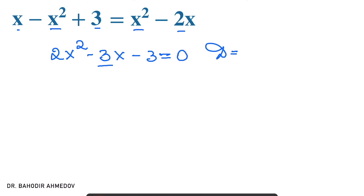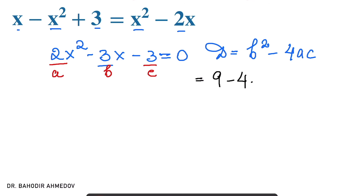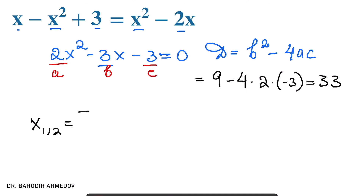The discriminant formula is b squared minus 4ac, where b is the coefficient before x, a is the coefficient before x squared, and c is the free coefficient. Substituting: b squared is minus 3 squared, which is 9. Minus 4 times 2 times minus 3 gives 8 times minus 3, which is 24 — so plus 24. Adding 9 gives a discriminant of 33.